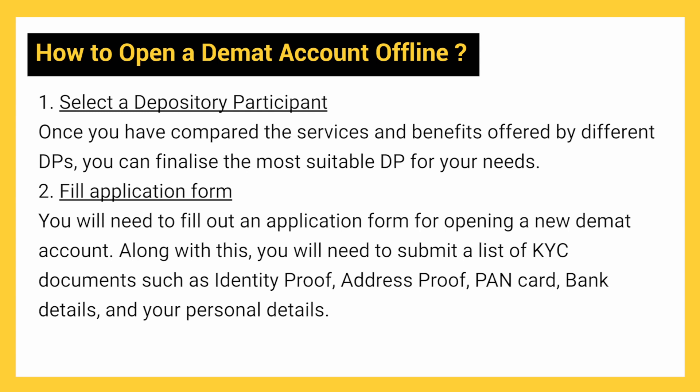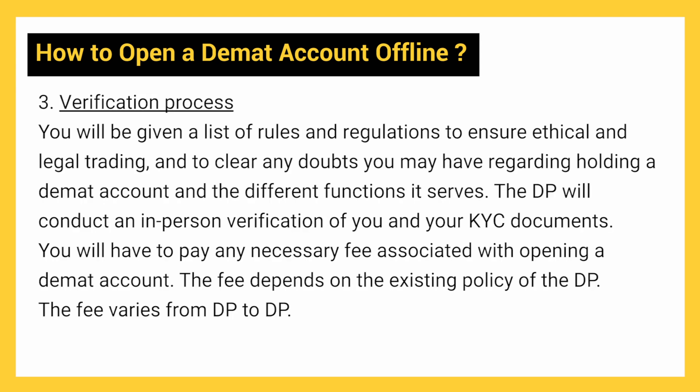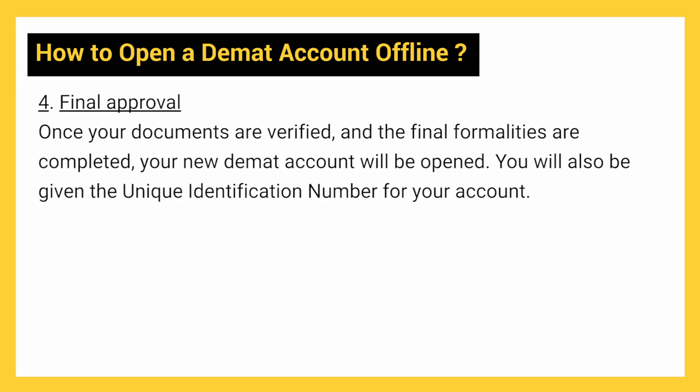How to open a DMAT account offline: The first step is to select a depository participant — compare the services and benefits offered by different DPs and finalize the most suitable one for your needs. The second step is to fill out the application form along with KYC documents such as identity proof, address proof, bank card, bank details and your personal details. The third step is the verification process, where the DP will conduct an in-person verification of you and your KYC documents, and you will need to pay any necessary fee associated with opening the account. The fee varies from DP to DP. The fourth and last step is final approval — once your documents are verified and formalities completed, your new DMAT account will be opened and you will be given a unique identification number.